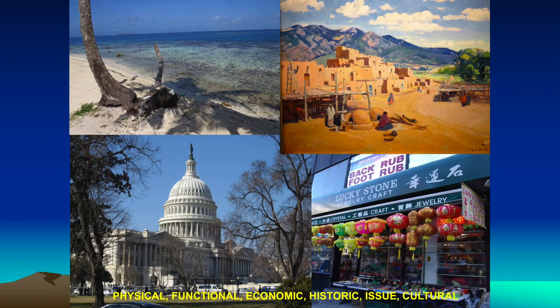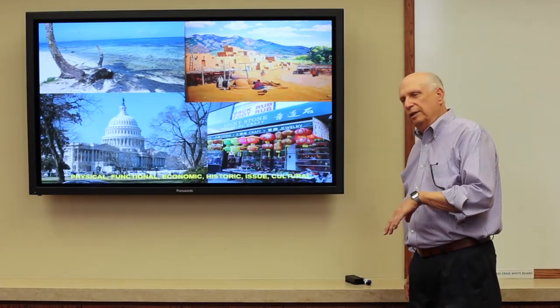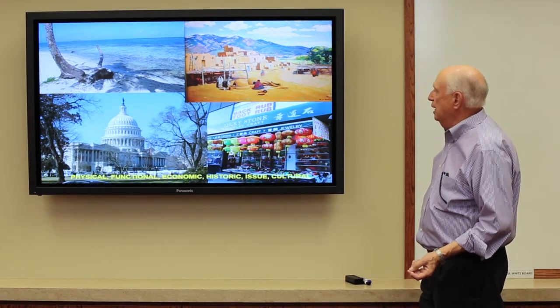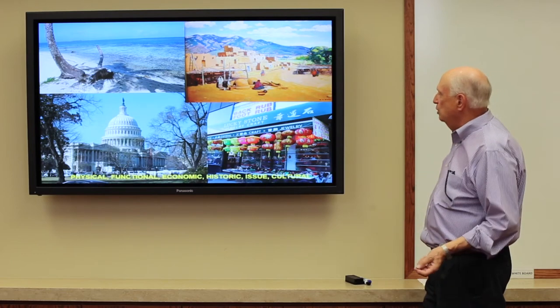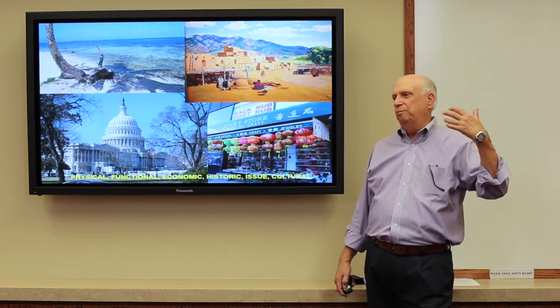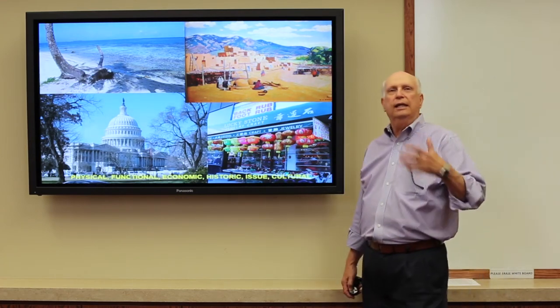How about thinking about where you live? You're in a particular community or city. What was the original physical or natural look, or what is the physical or natural landscape now? Does your place have a functional focus? Does it have various functions that make your place or city survive? Does it have economic importance — how do you connect economically to other places? It has historic significance — iconography, museums, places that are historically important. Your place might be associated with issues, and everything has human and cultural relevance. Take photos, paintings, anything, and get your students started thinking along those lines.